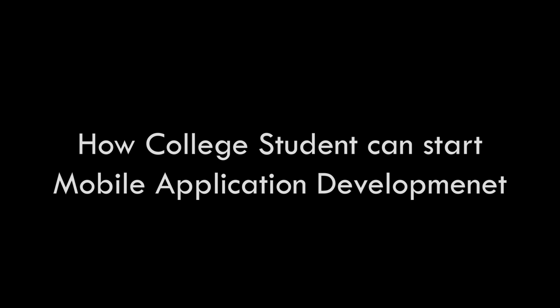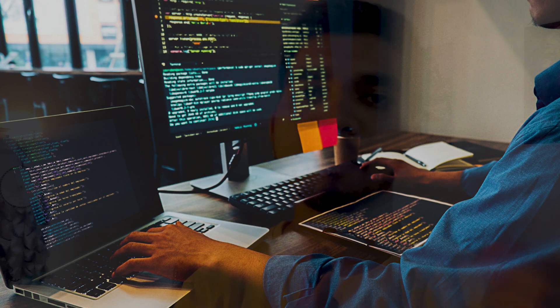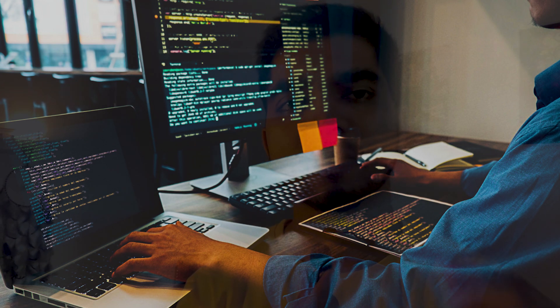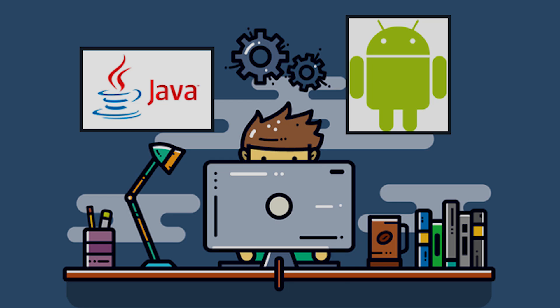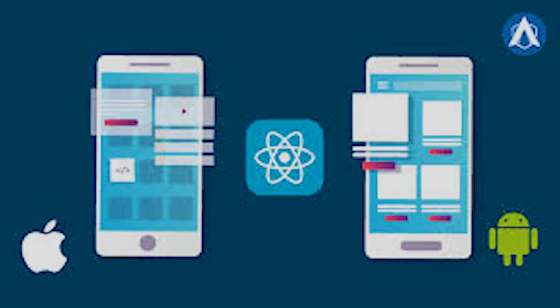For college students getting started in mobile application development — if you want to go towards iOS, the basic requirement is that you need a Mac, because to run the iOS development software Xcode you need a Mac. If you have a Mac you can go with iOS, Android, or React Native development. If you have Windows, you can go into Android development and React Native, but iOS will be difficult since you need the Xcode simulator which won't be available on Windows.